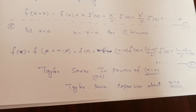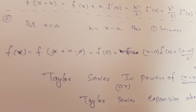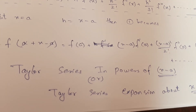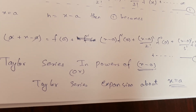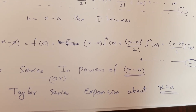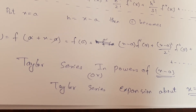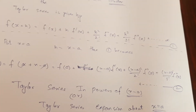If we put x = a and h = x - a, then the equation becomes: f(x) = f(a) + (x - a)·f'(a) + [(x - a)²/2!]·f''(a) + [(x - a)³/3!]·f'''(a) + ... to infinity. This is the Taylor series in powers of (x - a), or Taylor series expansion about x = a. This series is very important — make sure to practice it.